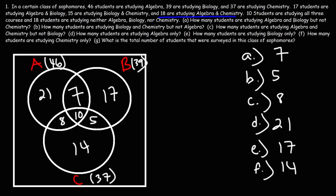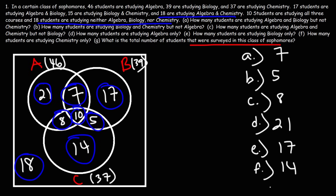Now, what is the total number of students surveyed in this class of sophomores? We need to add up all the numbers, including the 18 students studying neither algebra, biology, nor chemistry, who go on the outside of the diagram. Adding everything: 21 + 7 + 8 + 10 = 46, plus 5 + 17 = 68, plus 14 + 18 = 100. So 100 students were surveyed.